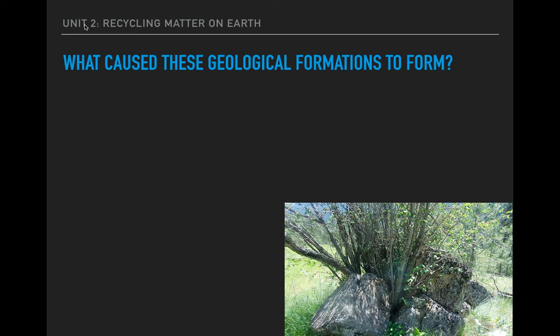Now let's look at some pictures and see if you can figure out what might be causing these forms of abrasion. Look at that picture — what do you think is causing that? That one's pretty easy. Obviously that is a plant growing out of a rock, so that has to be caused by a plant. Rocks are uneven and have tiny little crevices; if a seed lands there and is watered enough, you can get roots forming, and before you know it you have this giant thing breaking the rock into pieces.